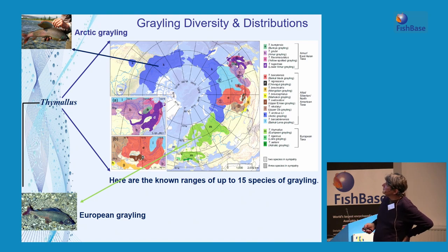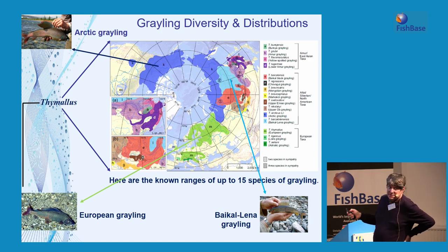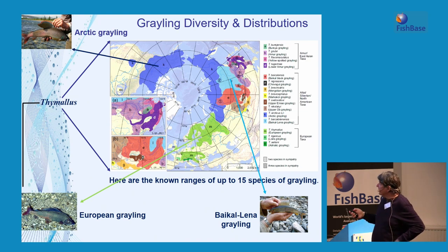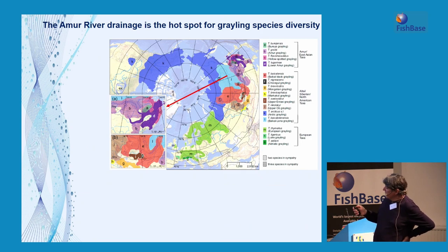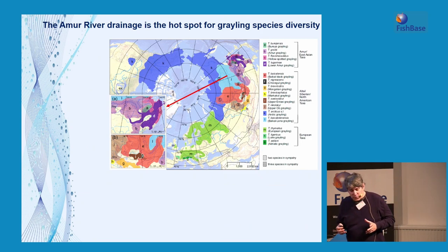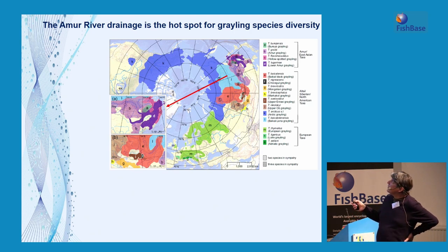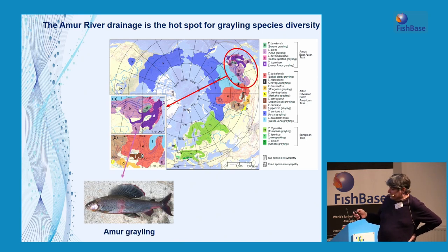Another widely spread species I was involved in first describing is the so-called Baikal-Lena grayling, found throughout central Siberia — a rather small-bodied species with very distinct characteristics. The concentration of diversity of graylings is actually found in far eastern Asia, in the Amur river drainage, where we have a number of species found either together in sympatry or right next to each other.